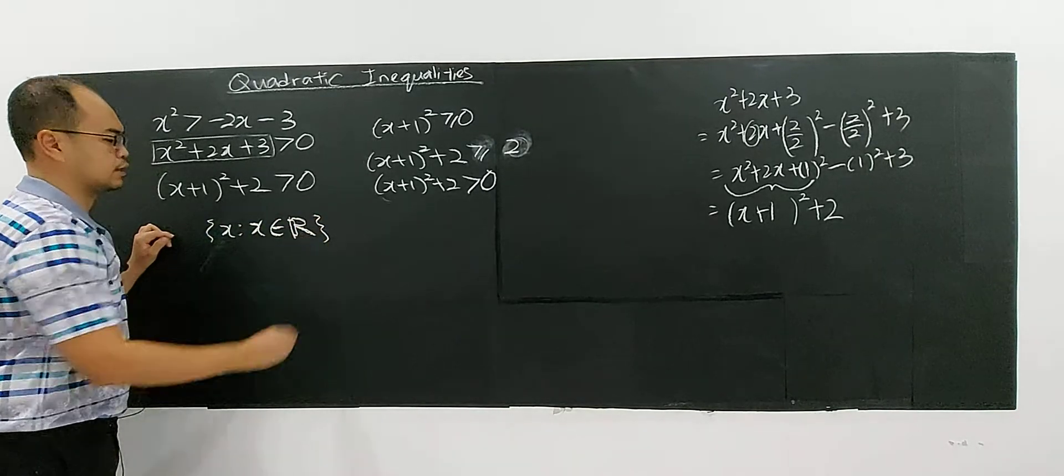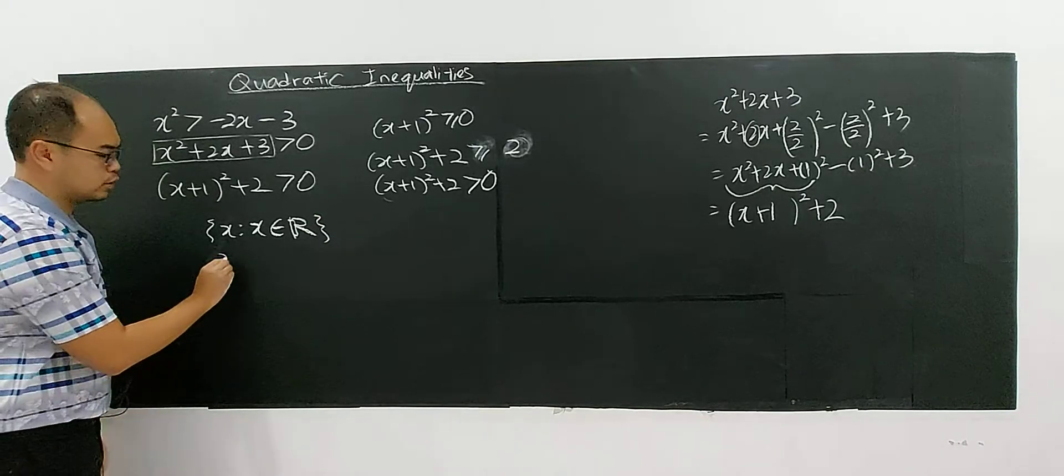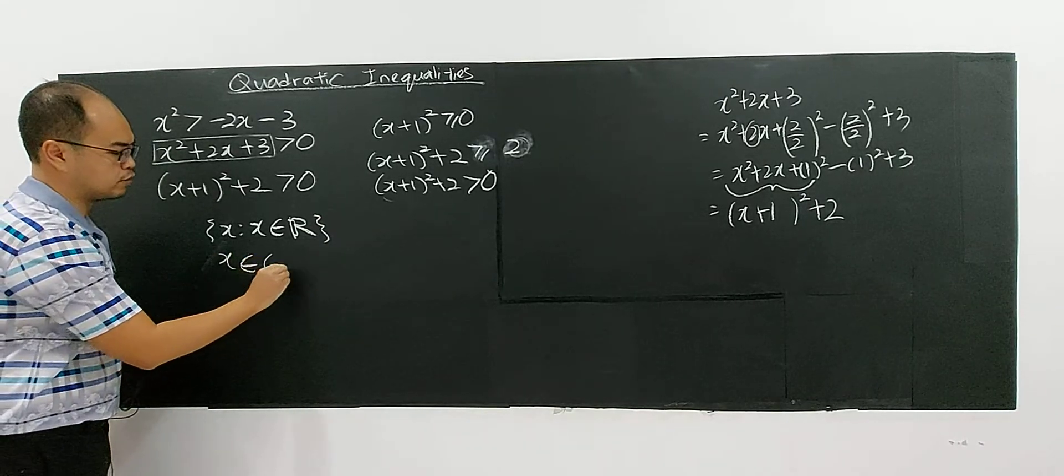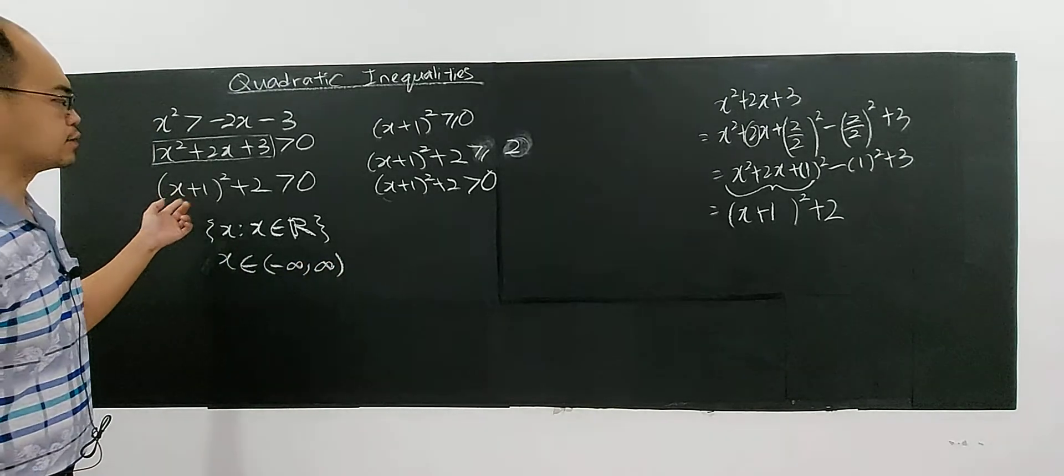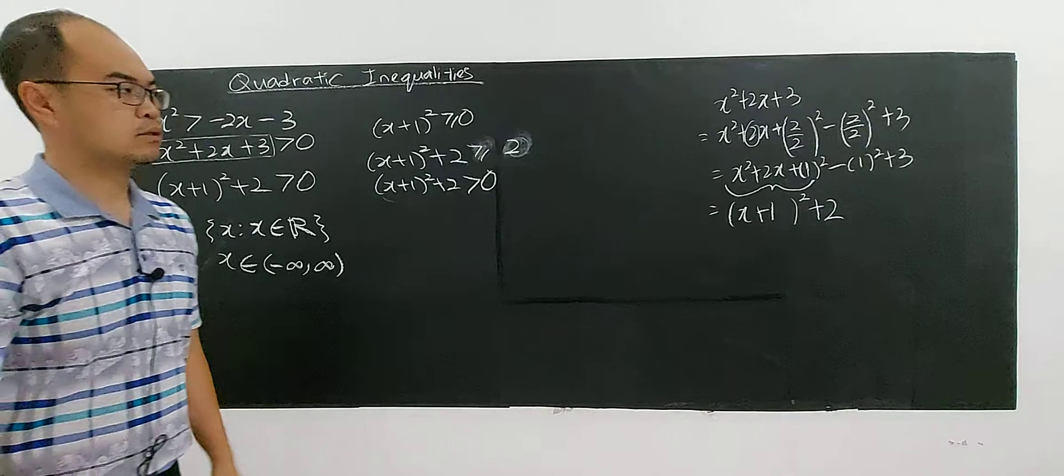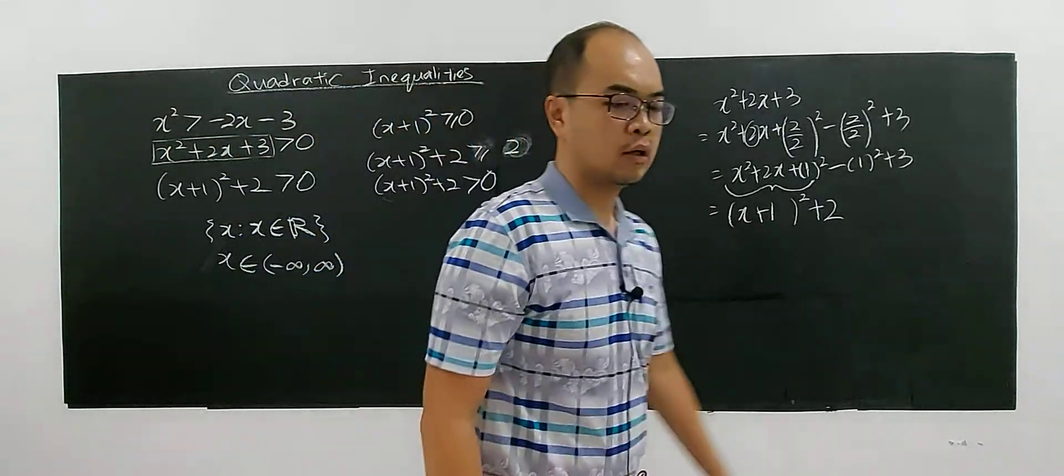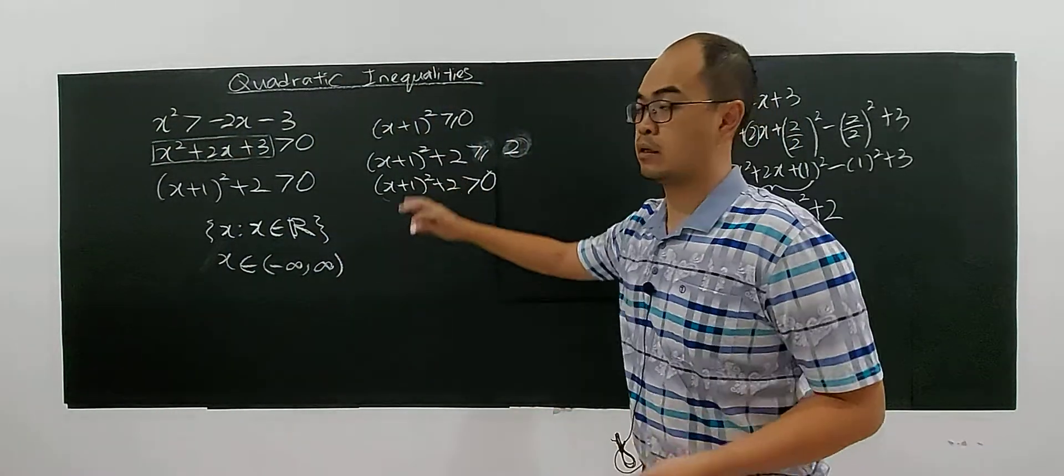This case means that the x can accept any real number. So this is the solution. Or, you can write in this form. It's an element of negative infinity up to infinity. Means every value of x is satisfied this inequality. I will show you one more.